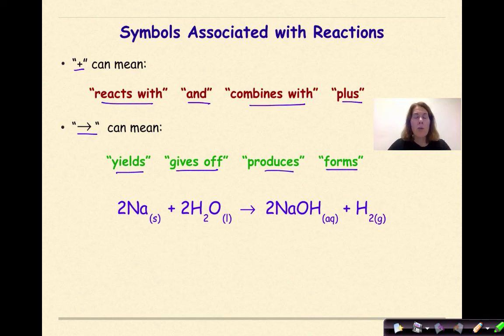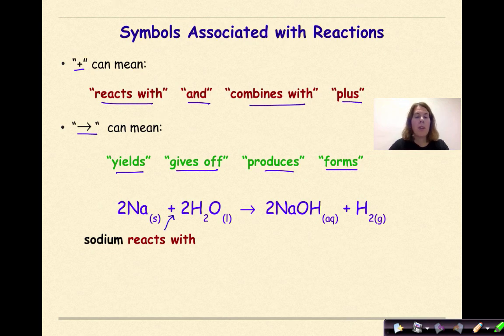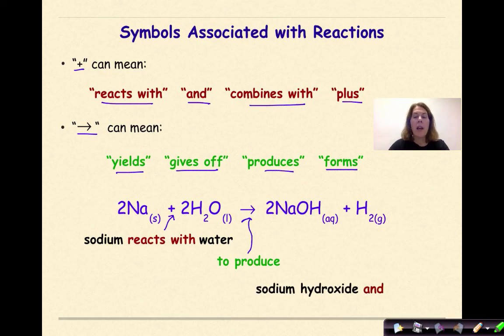So let's go back to our original chemical equation and add in symbols. We'll start with sodium reacts with, which is now representing this plus sign right here, water, to produce, which is represented by our arrow, sodium hydroxide, and, which again is our plus sign right here, hydrogen.